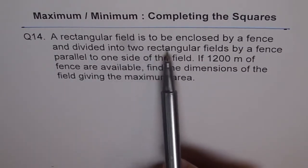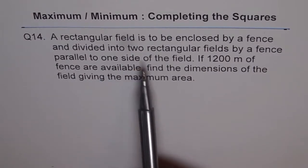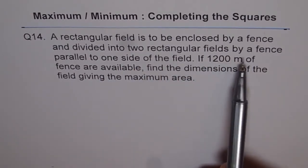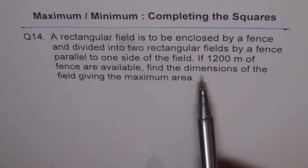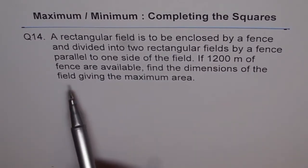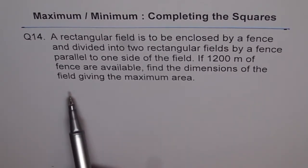A rectangular field is to be enclosed by a fence and divided into two rectangular fields by a fence parallel to one side of the field. If 200 meters of fence are available, find the dimensions of the field giving the maximum area.